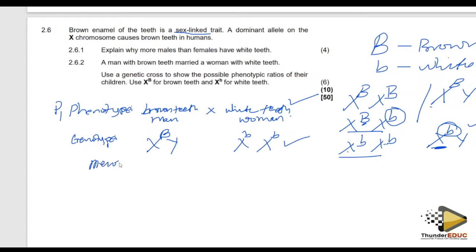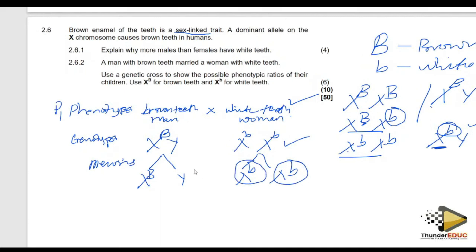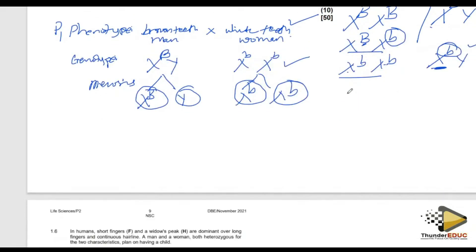Now go to meiosis. Meiosis splits these chromosomes. Don't leave the gametes without their X or Y labels. Then after meiosis, you have to do what you call fertilization. You can use a Punnett square or you can cross them. Let me just use a cross this time; the next time I will use a Punnett square.